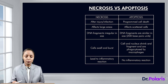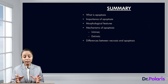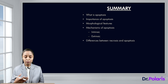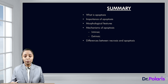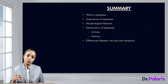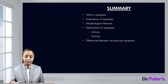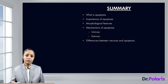In summary, we covered what apoptosis is, its importance and when it occurs, the morphological changes in apoptosis, the mechanisms of apoptosis including the intrinsic and extrinsic pathways, and finally the differences between necrosis and apoptosis.